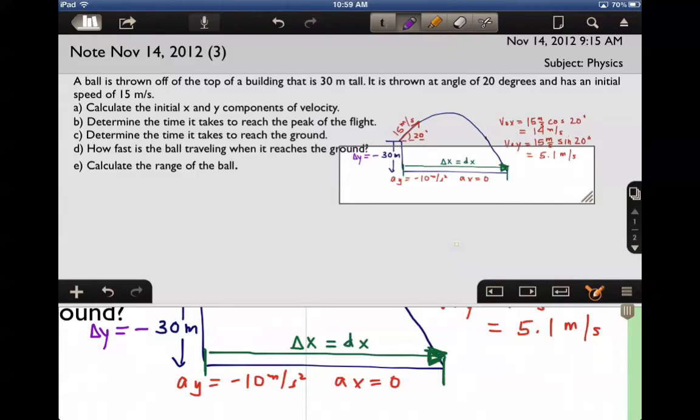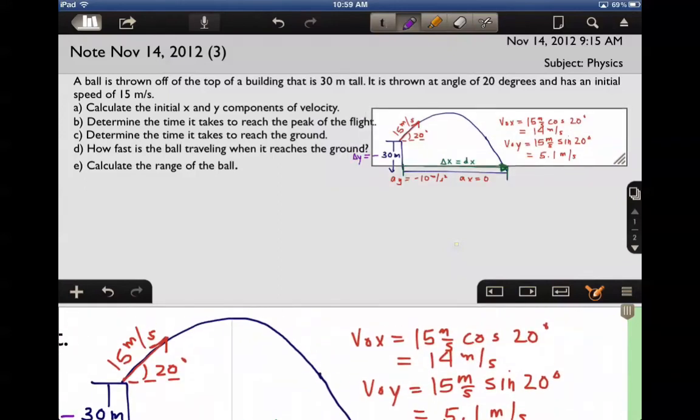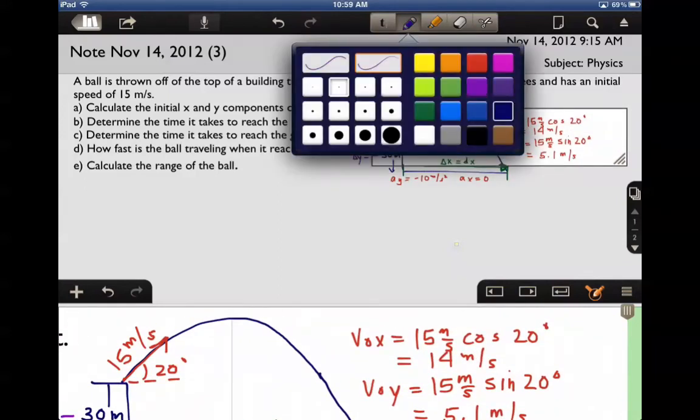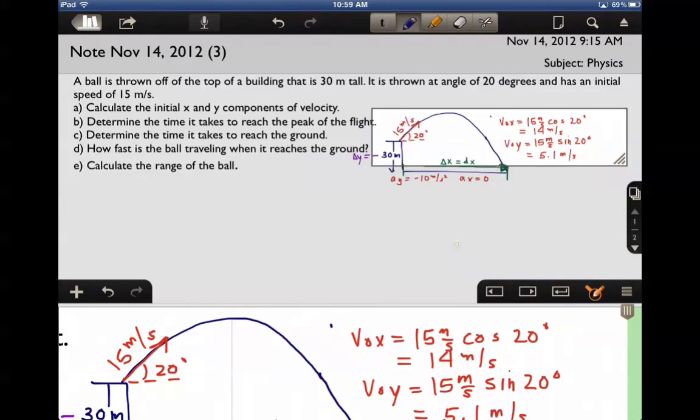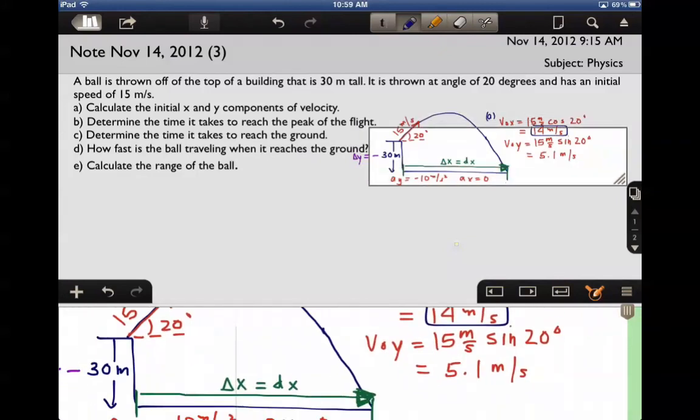Turns out I've actually already solved question a—the initial vertical and horizontal components of velocity right here. So let's move on over to B.